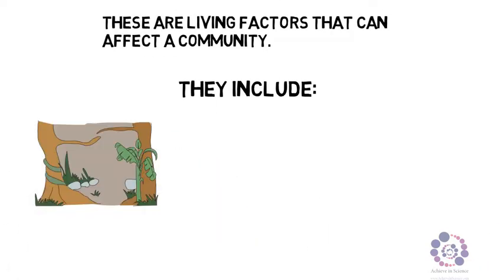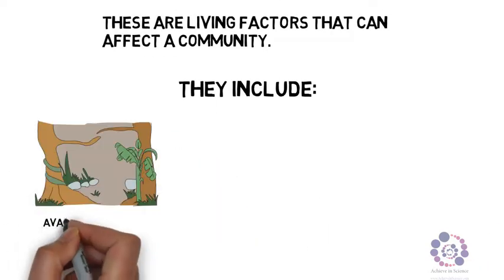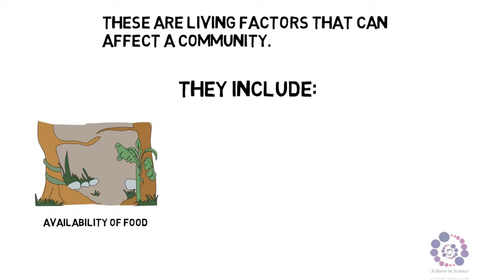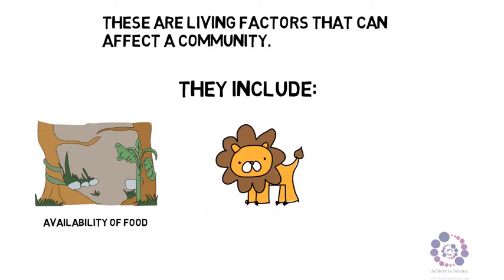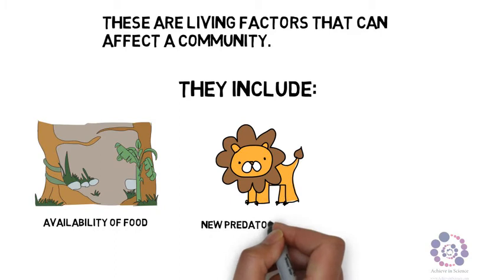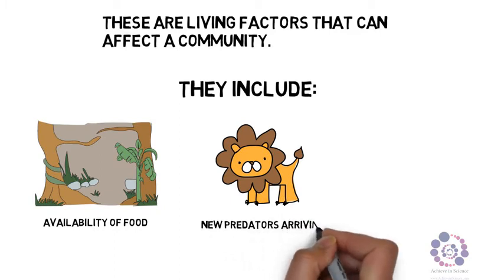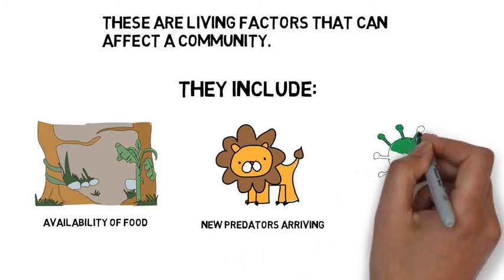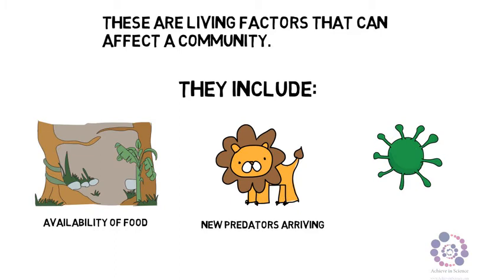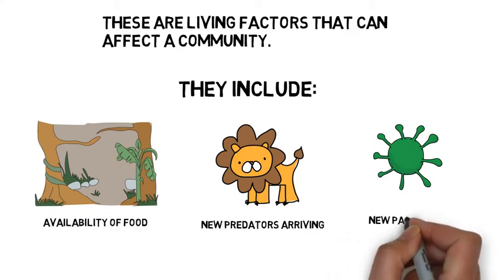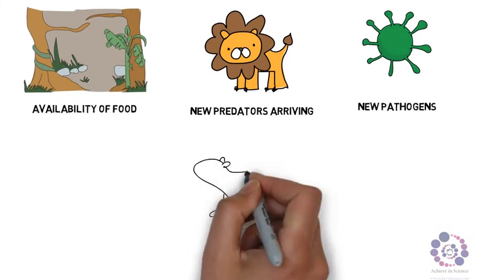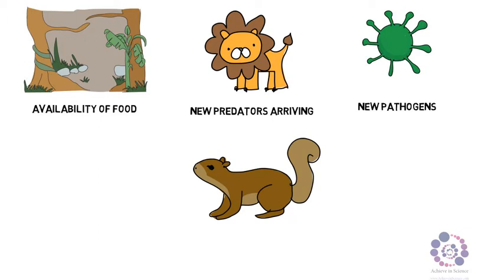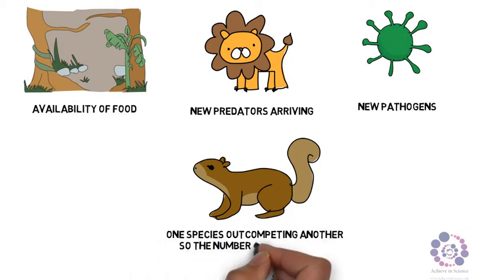Biotic factors include the availability of food, the presence of predators or a new predator being introduced, new pathogens, and the presence of a competitor that is better at competing than another.